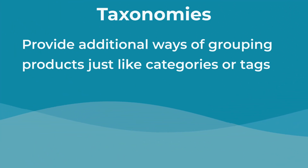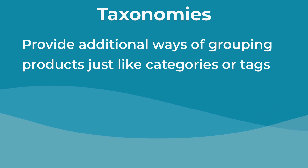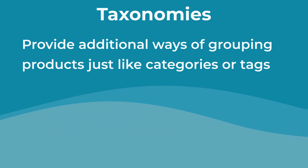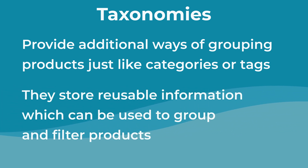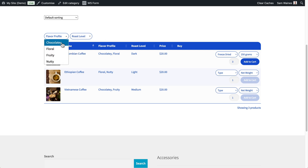On the other hand, taxonomies provide additional ways of grouping and organizing products, just like categories or tags, and they store reusable information which can be used to group and filter products. In my example, I used custom taxonomies for things like the roast level and the flavor profile. This allows customers to filter by those different attributes and find products within the same group.